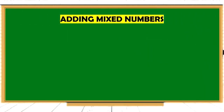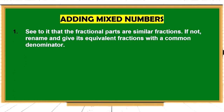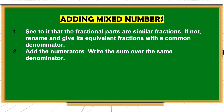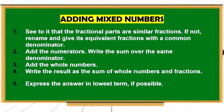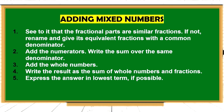Now let's have a recap on adding mixed numbers. First, see to it that the fractional parts are similar fractions. If not, rename and give equivalent fractions with a common denominator. Second, add the numerators and write the sum over the same denominator. Third, add the whole numbers. Fourth, write the result as the sum of whole numbers and fractions. And fifth, express the answer in the lowest term if possible.